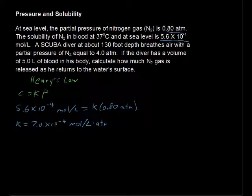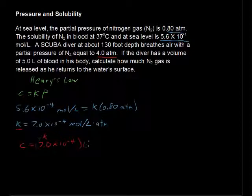The next step then is to take that constant and find the concentration at this partial pressure. We are going to use the K that we have to find C, the concentration at this new pressure. So C equals 7.0, that's our K, 7.0 times 10 to the negative 4th times our partial pressure, and that is 4.0 atmospheres to keep our significant digits.